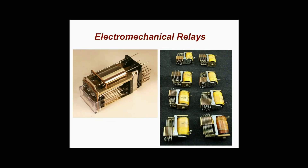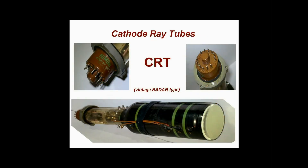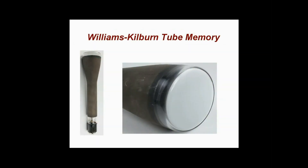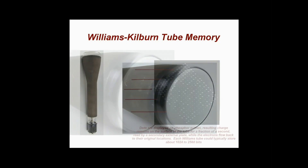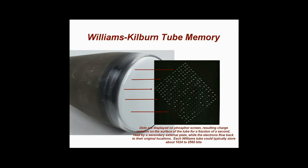Tubes were also faster than earlier mechanical relays used in some computing devices. The technology of the cathode ray tube, or CRT, familiar in early radar equipment and television sets, was modified and used in the University of Manchester's Mark I in 1948. One of the world's first stored-programmed computers, it utilised CRTs as an early form of computer memory, which became known as the Williams-Kilburn tube after inventors Frederick Williams and Tony Kilburn.